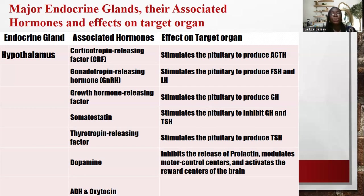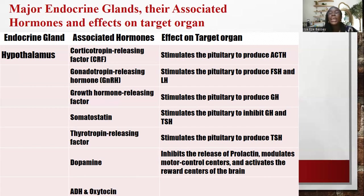The hypothalamus also produces gonadotropin-releasing hormone, which stimulates the pituitary to produce FSH and LH; growth hormone-releasing factor, which stimulates pituitary production of growth hormone; somatostatin, which inhibits growth hormone and TSH; thyrotropin-releasing factor, which stimulates the pituitary to produce TSH (thyroid-stimulating hormone); and dopamine, which inhibits prolactin release, modulates motor control centers, and activates the reward center of the brain — sometimes called the feel-good hormone. The hypothalamus also produces ADH and oxytocin, which are stored in the posterior pituitary and released when needed.